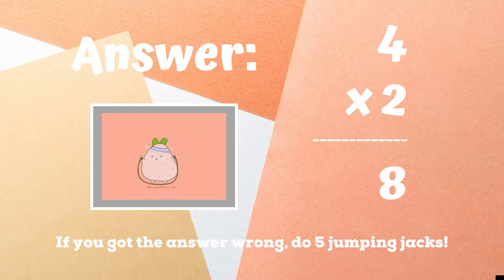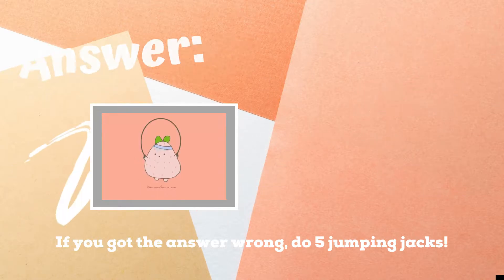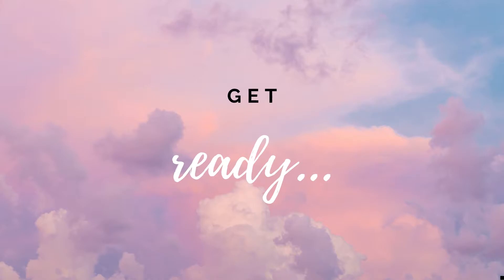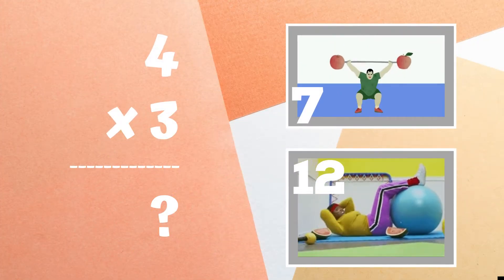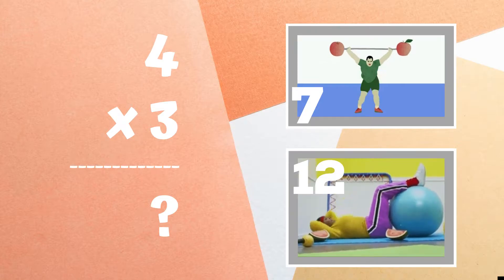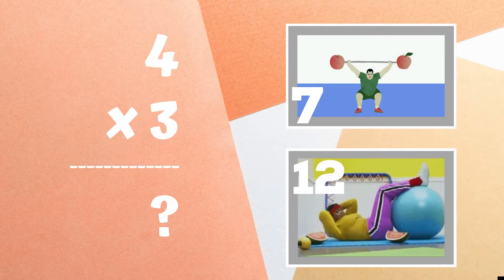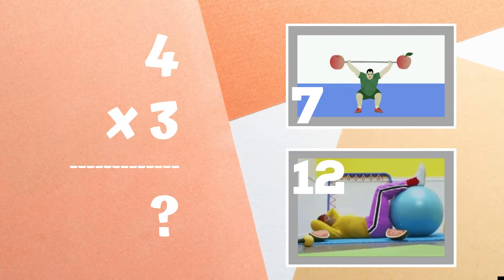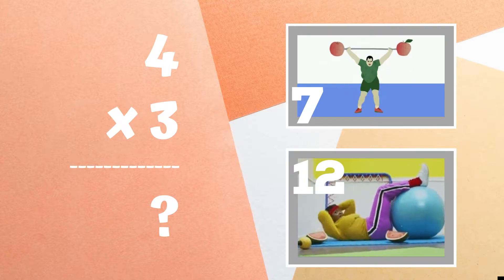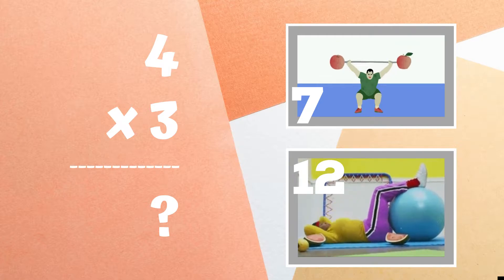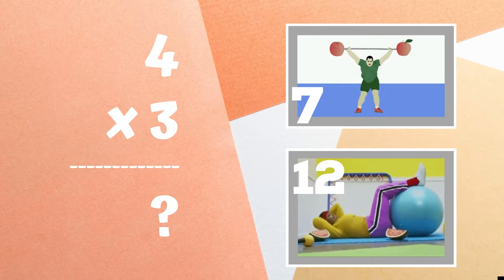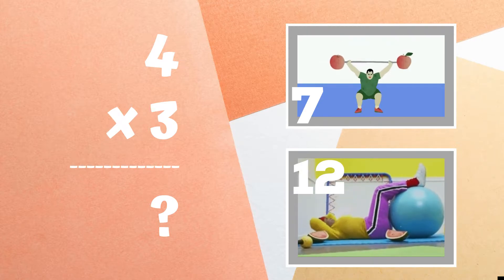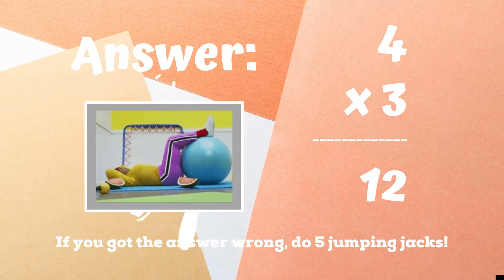Ready, go. Get ready. Four times three equals — copy the exercises next to the number you think is the right answer. Is it seven or is it twelve? If you were doing crunches because you guessed the answer twelve, you got it right.